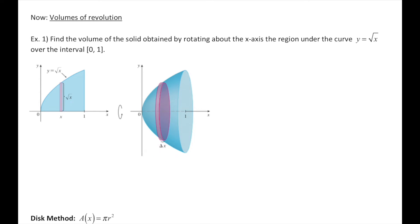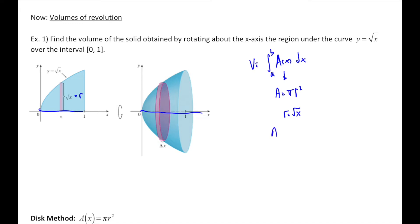Our volume is once again going to be the integral from a to b of the area of one slice multiplied by that thickness. When we are rotating around some axis, our area is π r squared, so it's up to us to determine what that radius is. We're rotating around the x-axis, so our radius is the height of that curve at whatever value of x we have. In this case, our radius is square root of x, so our area is π times (square root of x) squared, which equals π x.